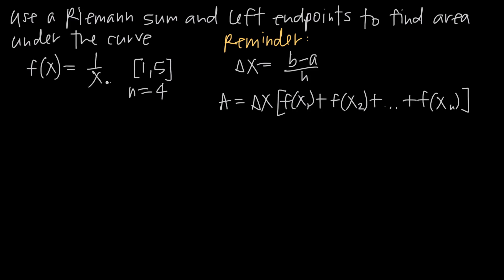So on this interval, we're looking for area underneath this curve. We've been told that n = 4, and n is the number of subintervals that you divide this interval into — or you can think of it as the number of rectangles you're going to use to approximate area underneath the curve.